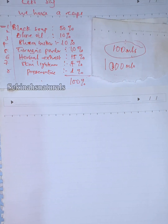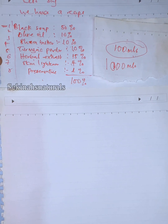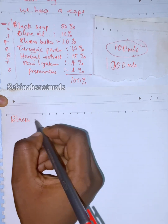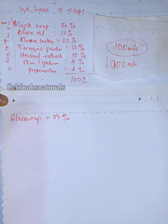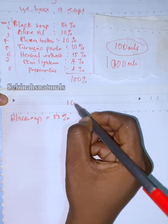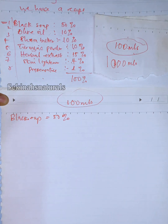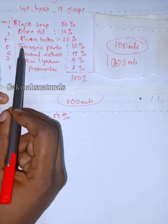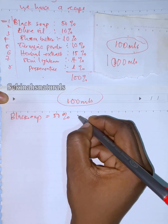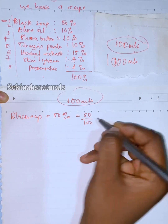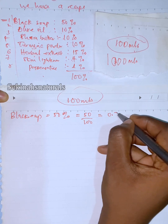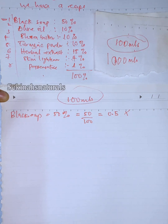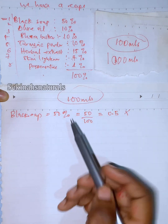For this exact same recipe, our black soap is 50%. Take note that we are calculating for 100 mils of black soap — that is the total amount of black soap I want to produce with this recipe. So 50 black soap is 50 over 100, which gives us 0.5. That is our percentage, times the total amount of product I want to produce.